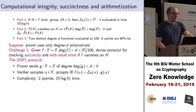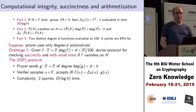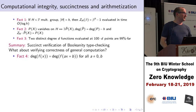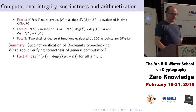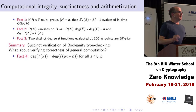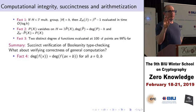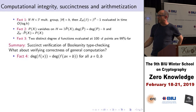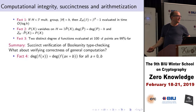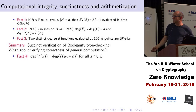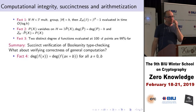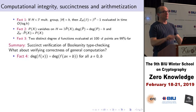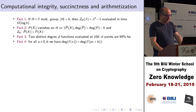Before the last example, we need a fourth fact: the degree of a polynomial remains invariant under a linear transformation applied to its input. That is, the degree of f(x) equals the degree of f(ax + b) for any nonzero a and any b. If a is zero, this becomes a constant polynomial of degree zero, so the equality only holds for nonzero a. We need this fact for the general-purpose computation example.